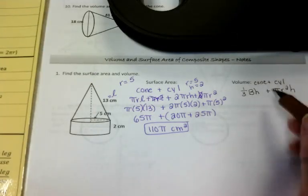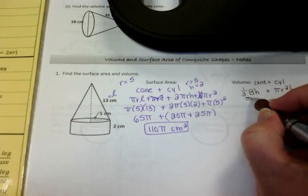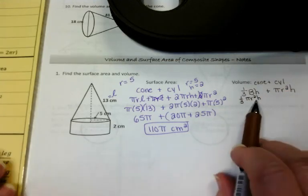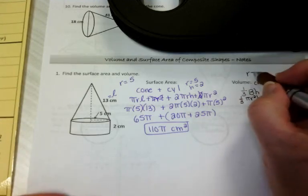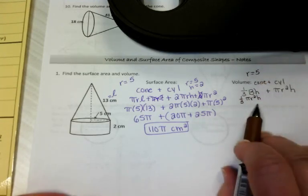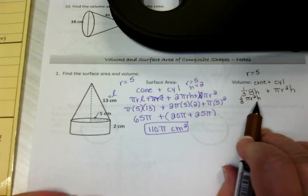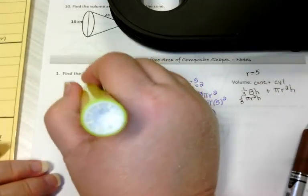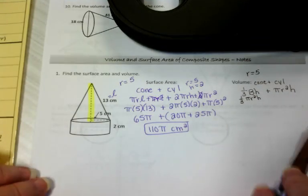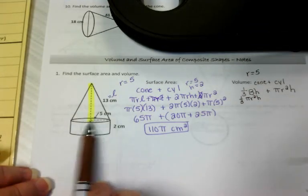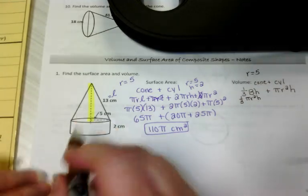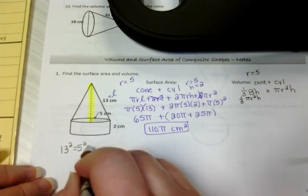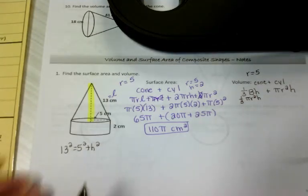For a cone, the base is pi r squared, because it's a circle. So we've already identified the radius of the cone as 5. I don't think we've identified the height of the cone yet. So here's the height of the cone. Remember the slant height is the hypotenuse, and we have the radius. So I'm just going to do a little Pythagorean theorem to find the height of my cone.